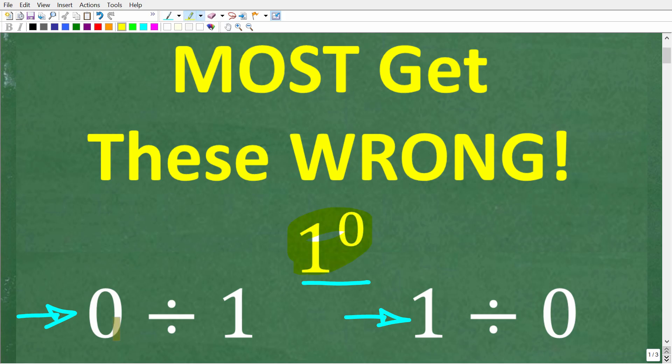All right, so we got one to the zero power, zero divided by one, and one divided by zero. So if you think you know the answers, put those into the comments section because I'm going to get into the full solutions to these questions right now.